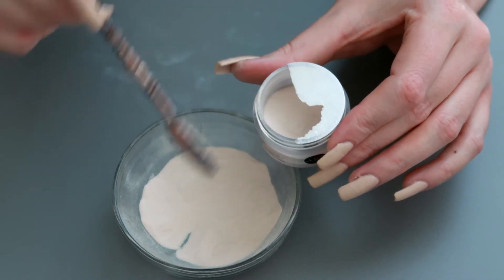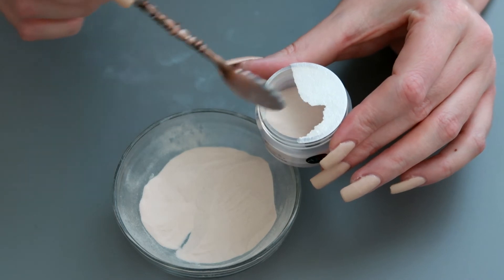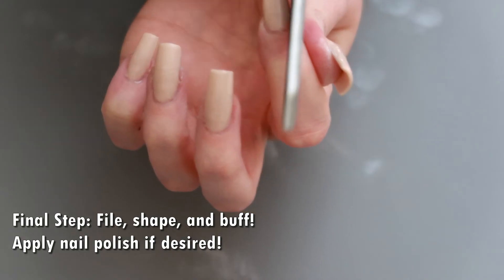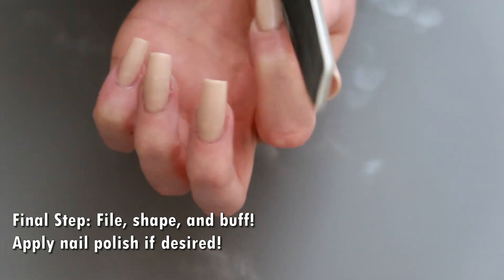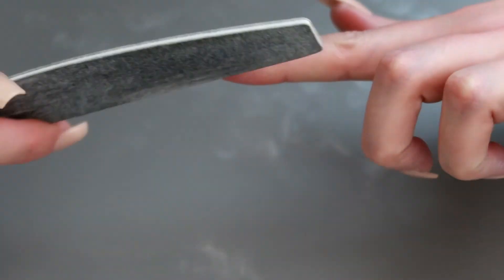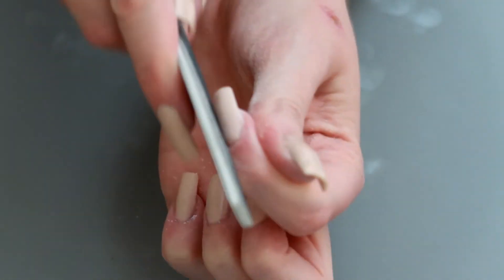The last step is to just reshape, file, buff out any of those bumps, and then shine them if you want, and then you're done. I think I'm just going to leave them like this. I just buffed them. I didn't put on any shine nail polish or anything. You can put on nail polish after this, but I kind of like the matte look. And I think in a couple days, I'm going to be trying out a gel nail polish kit, so I might use it on top of these.